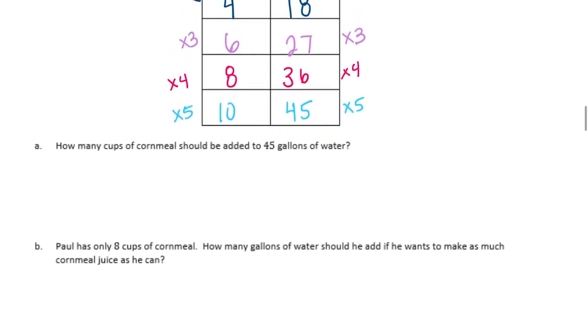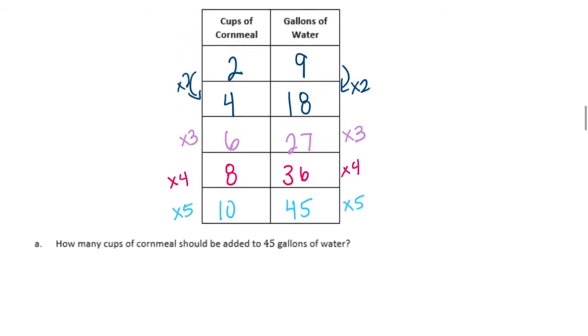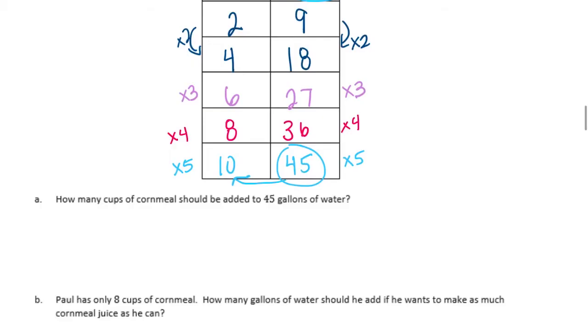Now A says how many cups of cornmeal should be added to 45 gallons of water. So let's look for gallons of water is right here in 45. So for 45 gallons of water we would need 10 cups of cornmeal.